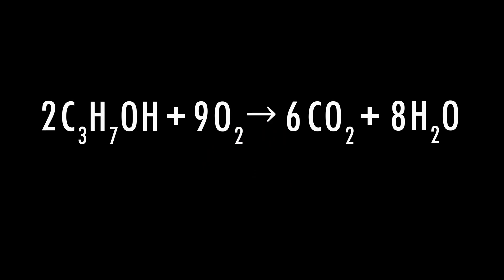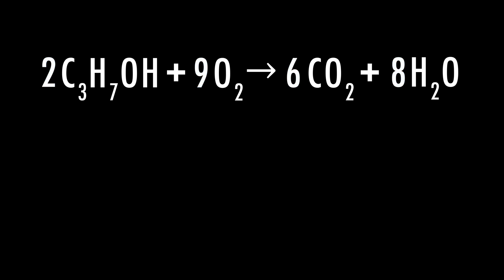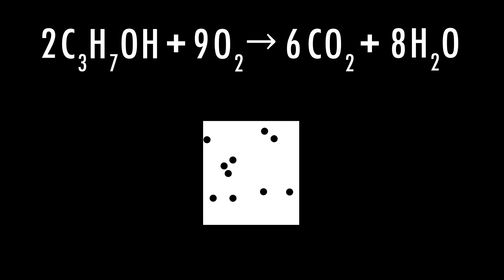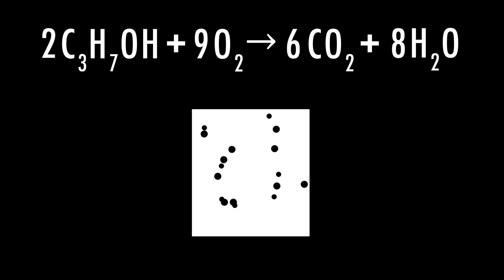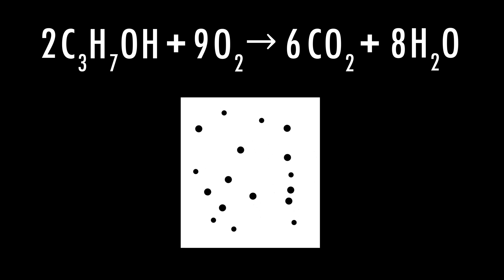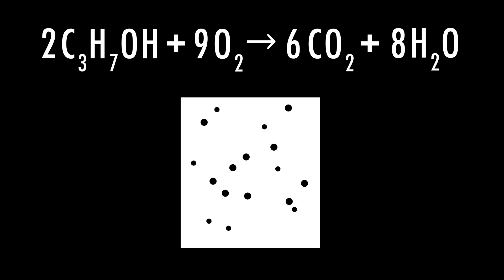If you look at the reaction, we see we start with 11 molecules on the left, but after combustion we have 14. From Avogadro's law, we know that all gases take up the same amount of volume regardless of their size. So even though the CO2 and water molecules are much larger, they'll still take up the same amount of room, meaning pressure builds up.